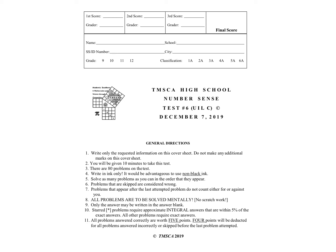Today I'm going over a TMSEA high school number sense test number six, which is a UIL C test. This was given December 7th, 2019, so this is Test C for 2019 and 2020. The instructions say you will have 10 minutes to take this test, there are 80 problems, and all problems are to be solved mentally — no scratch work, only the answer may be written. Let's take a look at the first column of problems, which is 1 through 18.